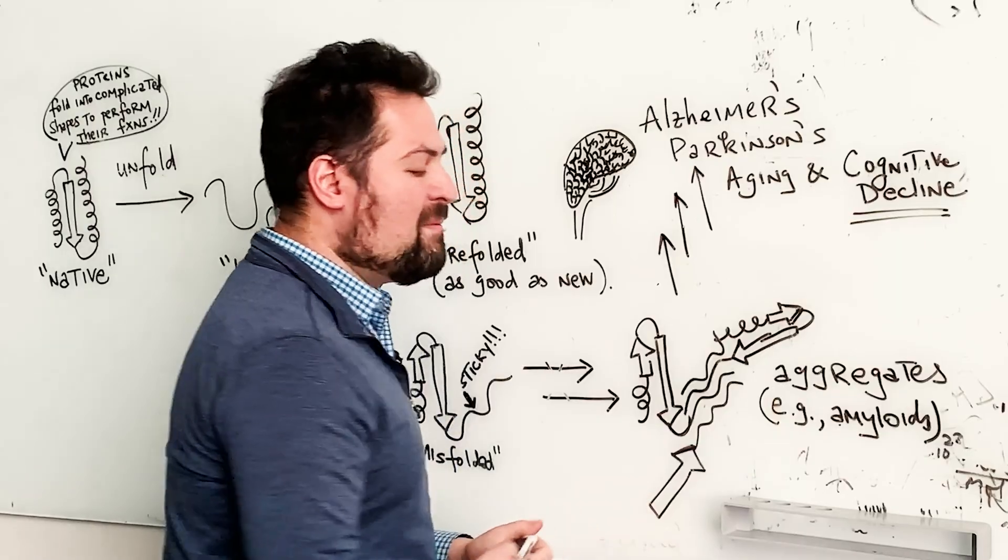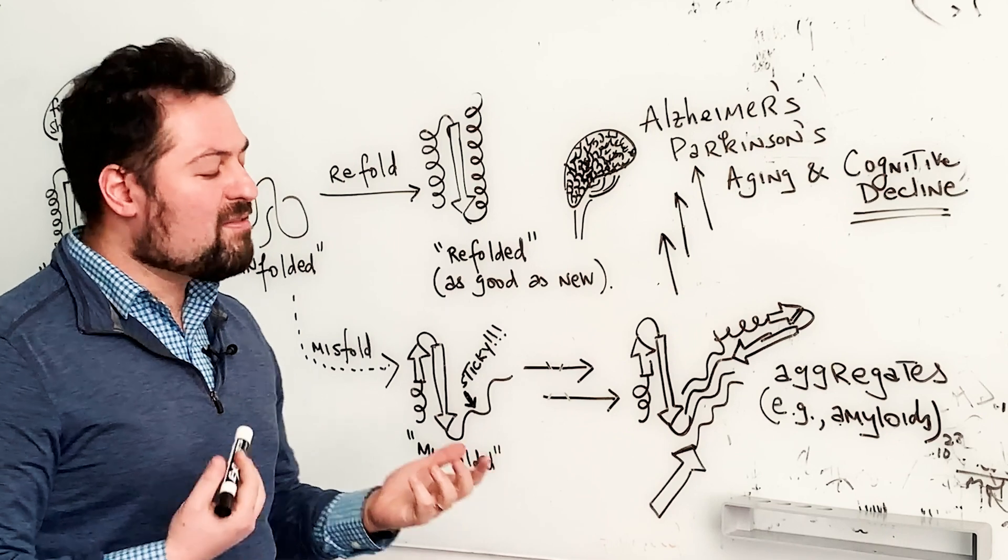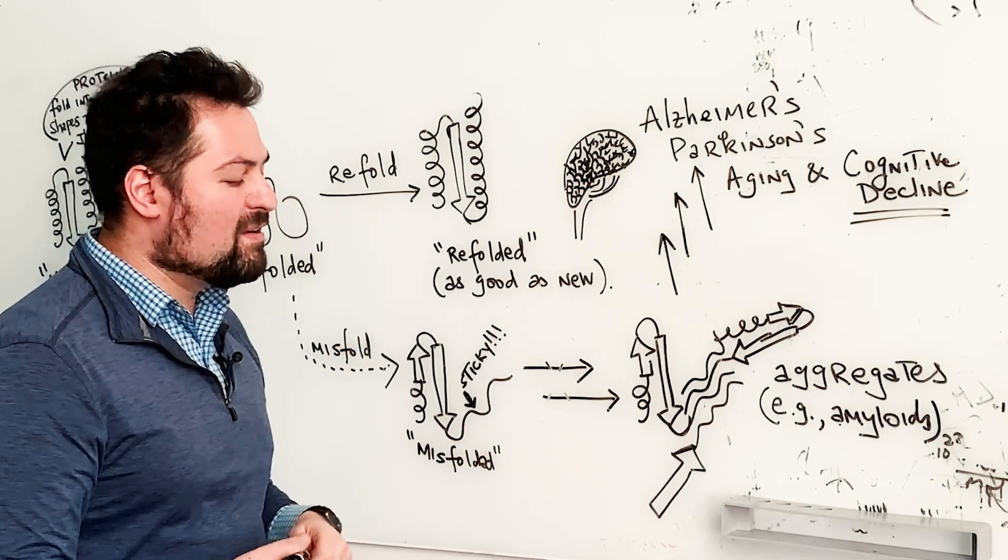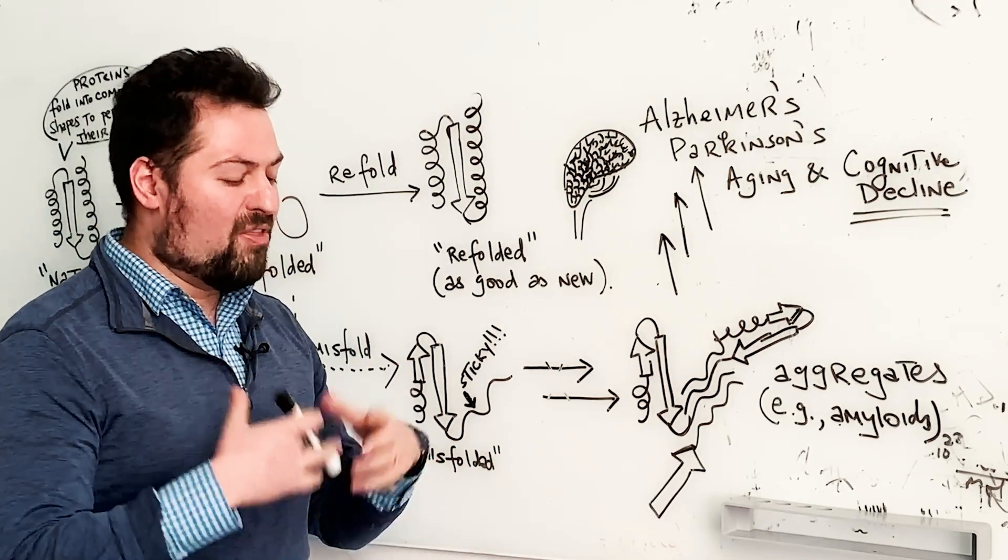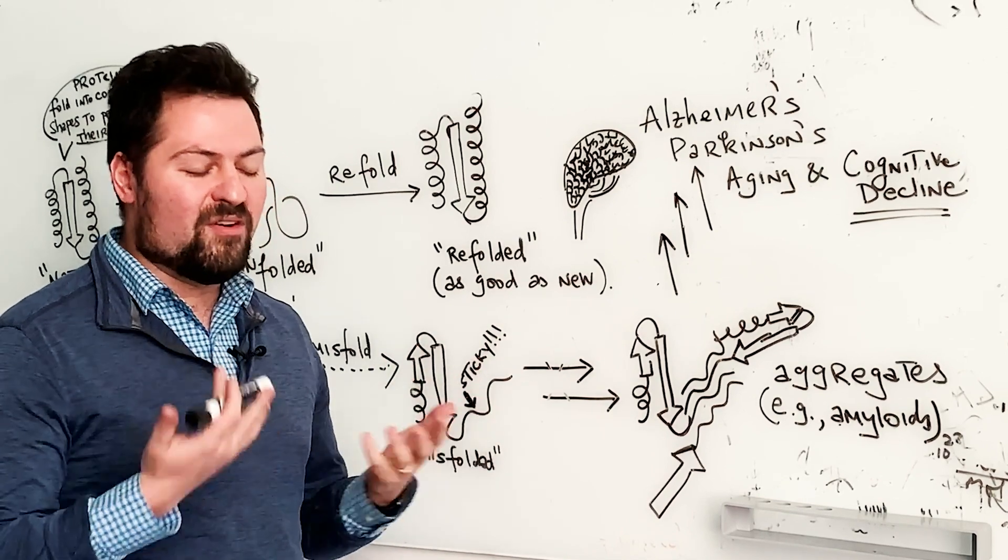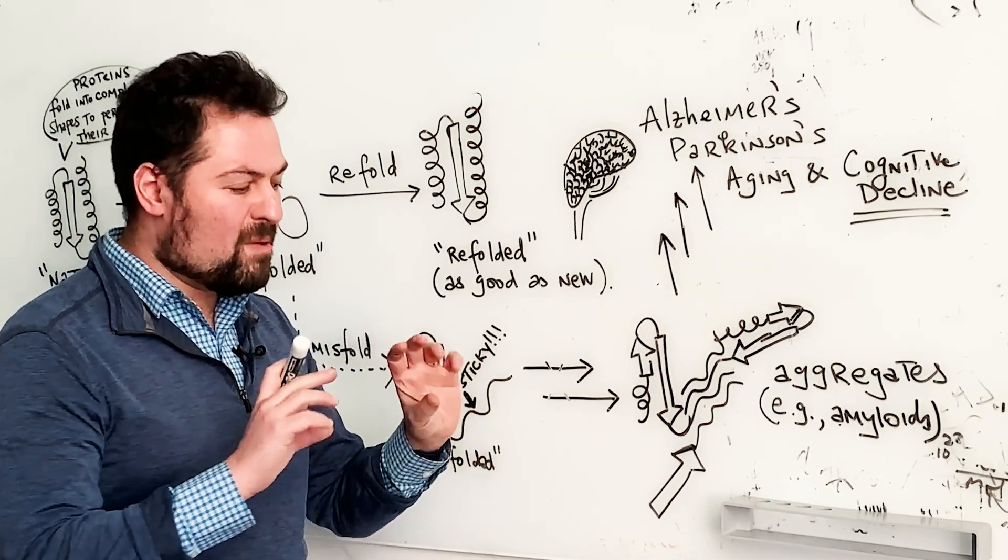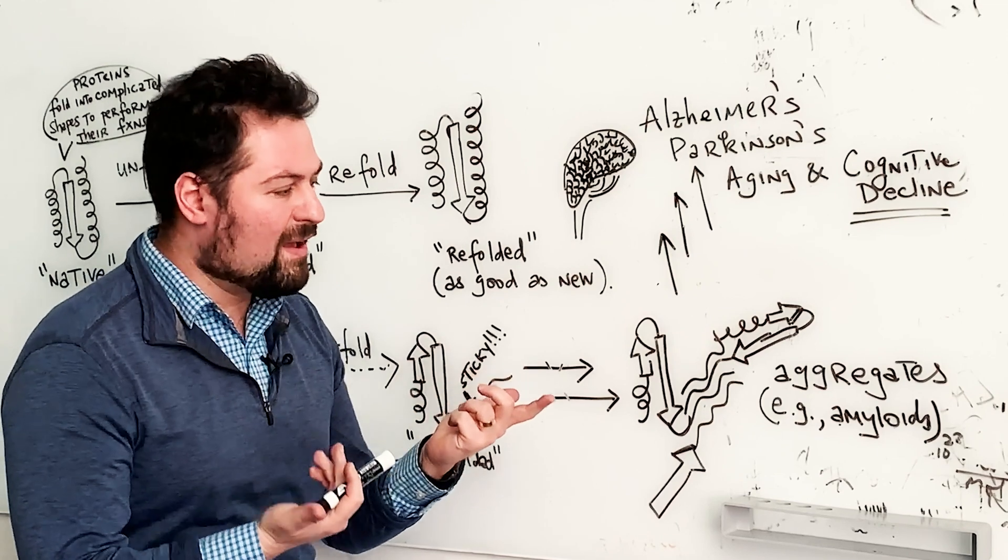Now, sometimes these aggregates are good. This is, for instance, what happens when you take an egg and scramble it. You'd notice that you start with a liquid egg that has all the different egg proteins, and they eventually become a solid, that's the scrambled egg.